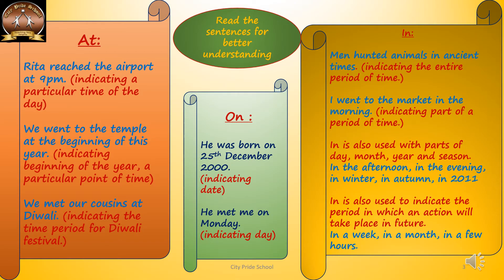Now we can see when 'at' is used. Rita reached the airport at 9 pm. Here 'at' indicates the particular, specific point of time — that is 9 pm. We went to the temple at the beginning of this year — again a particular point of time. So when a specified time is given, we can use 'at'. We make our Haseins at Diwali. Here, 'at' indicates the time period of the Diwali festival.